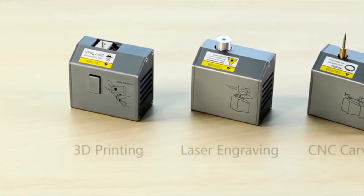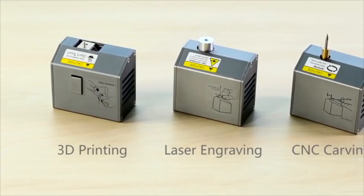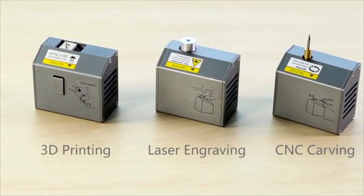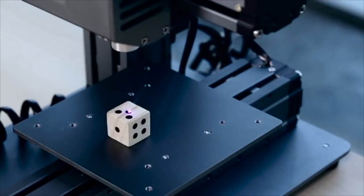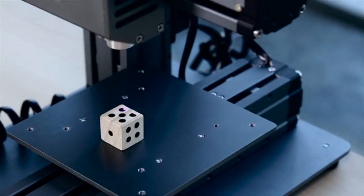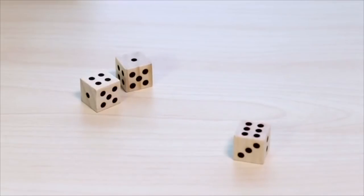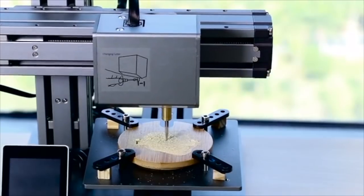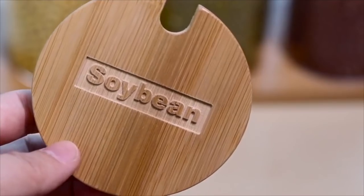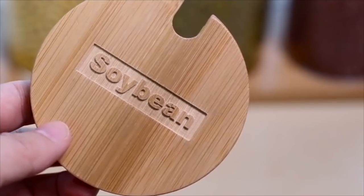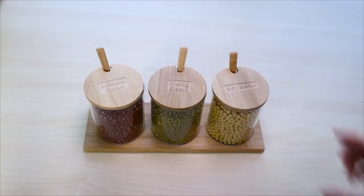Snapmaker also features expanded options of laser engraving and CNC carving. With interchangeable heads, Snapmaker can be easily transformed into a laser engraver that sparks your creativity and CNC carving machine that lets your imaginations run wild. Snapmaker is versatile, inspiring you to create in more ways.